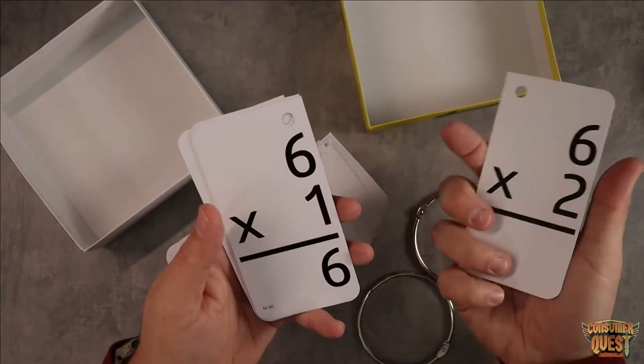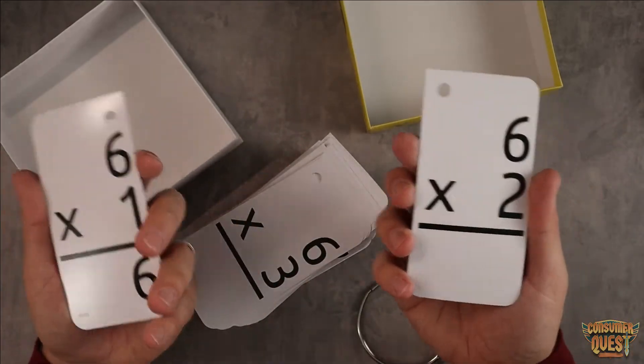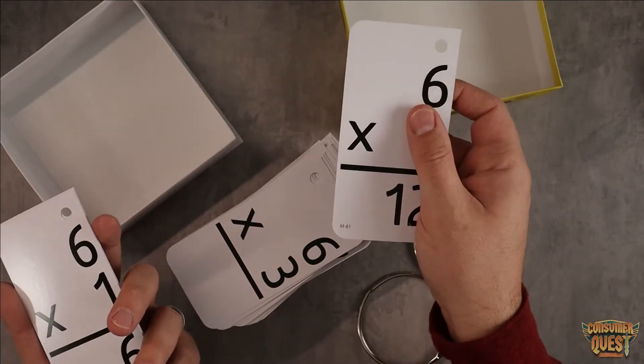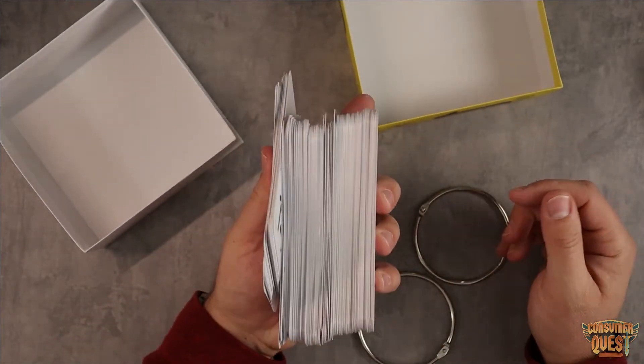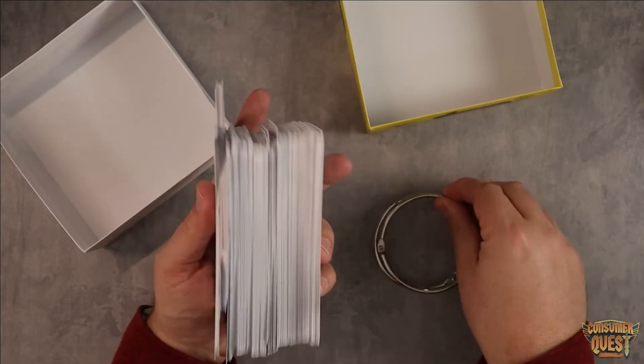Then they can come to you and you can test them with the equation on the front and the answer on the back. Very convenient - you get a lot of them, comes with two different rings, you can break them up into two different sets.